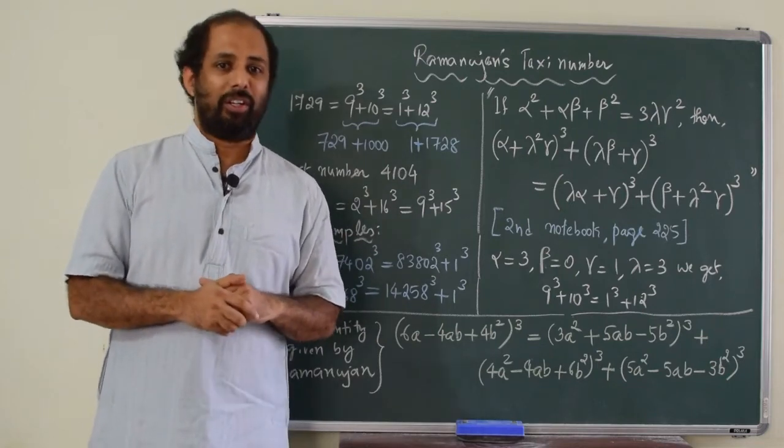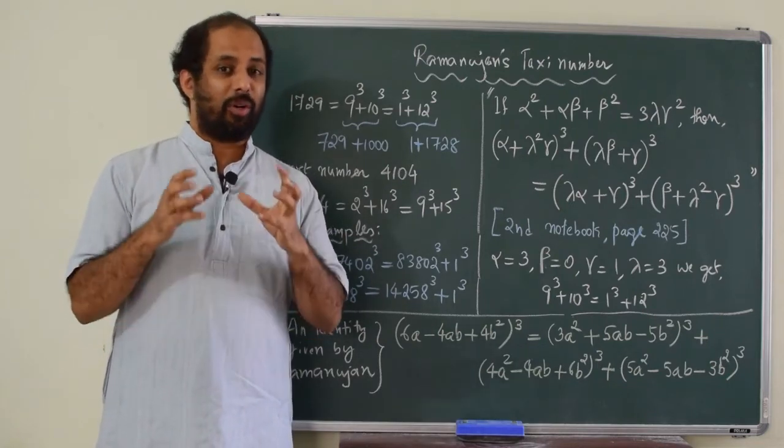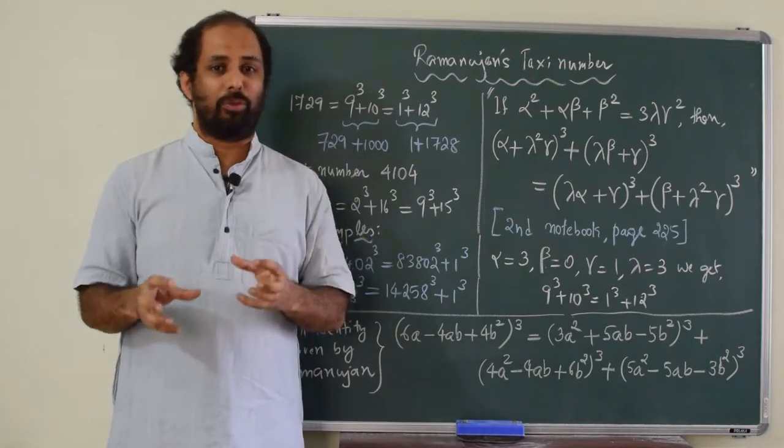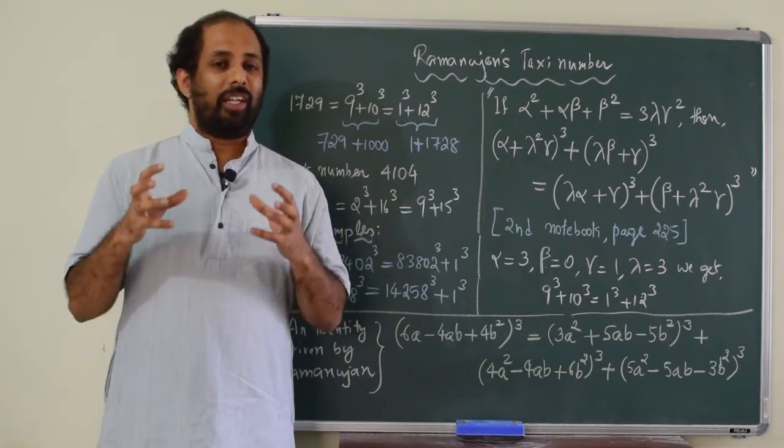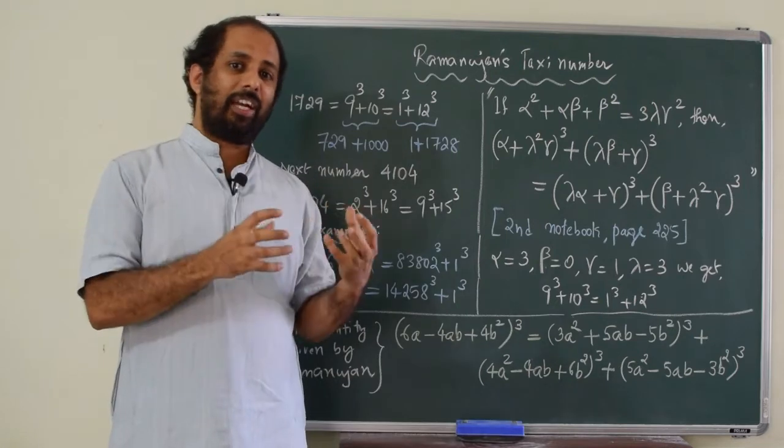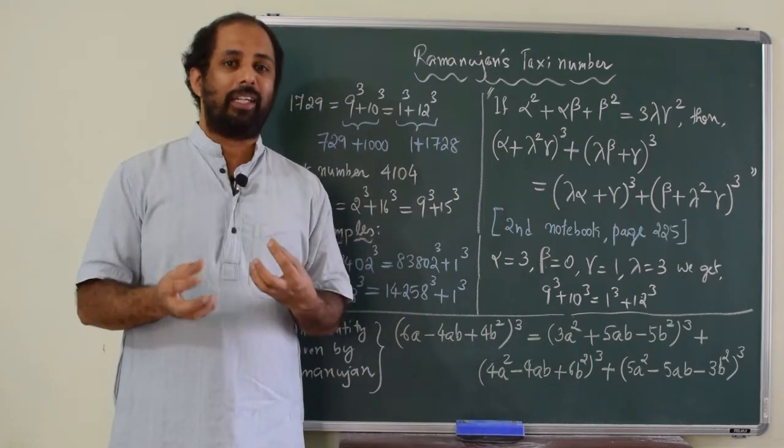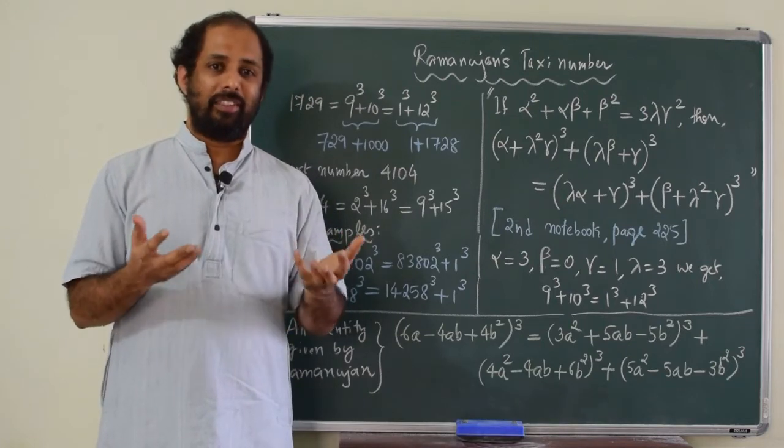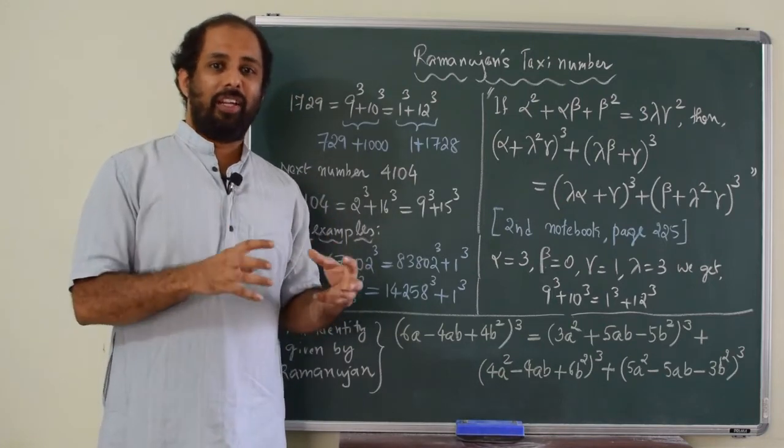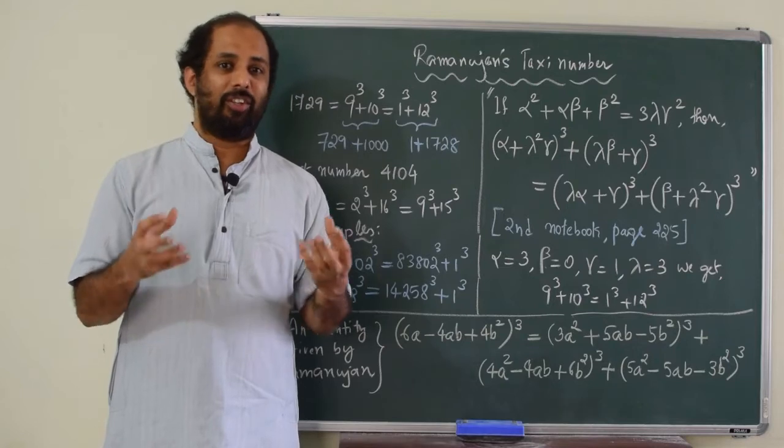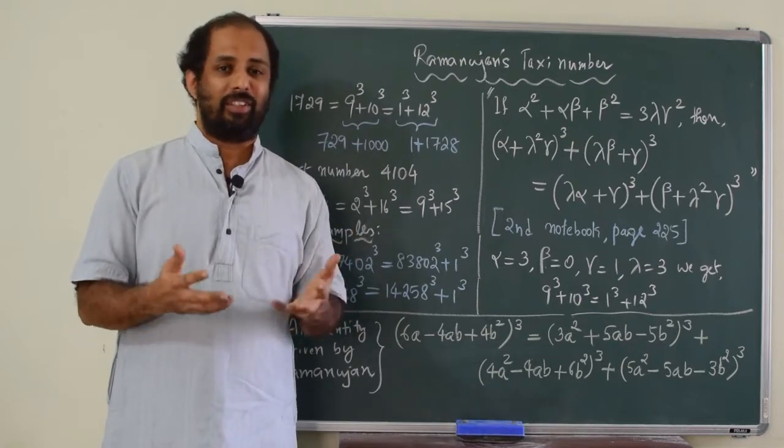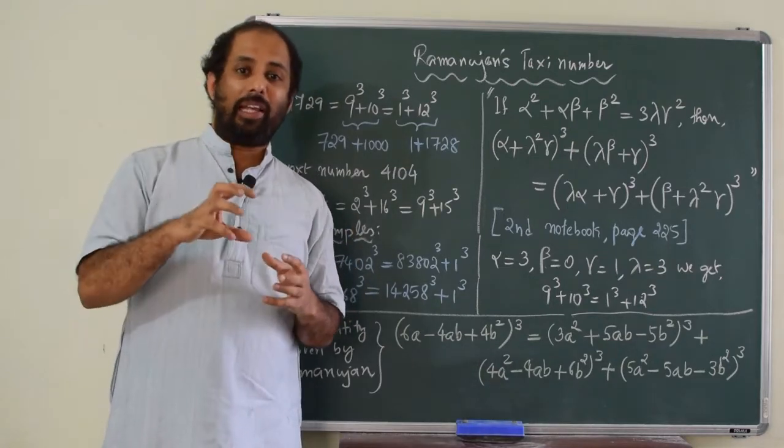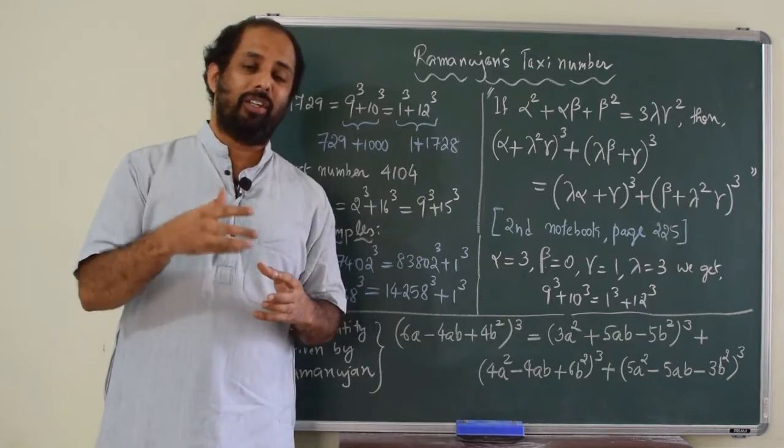And when Ramanujan told that 1729 is the smallest number that can be written as sum of two cubes in two ways, what he did was, he actually recollected a property that he had invented long back. See, most of the times, teachers in schools say Ramanujan invented this property all of a sudden, on the spot. So, this is the genius of Ramanujan.